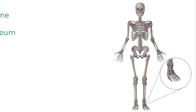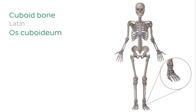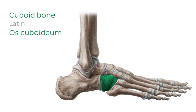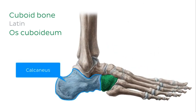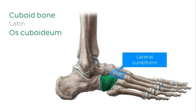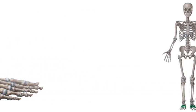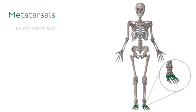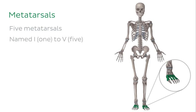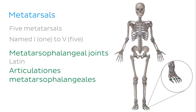The last tarsal bone is the cuboid bone, which articulates with the calcaneus posteriorly, the lateral cuneiform medially, and the fourth and fifth metatarsals anterolaterally. There are five metatarsals of the foot that connect the ankle to the toes, named one to five from medial to lateral when viewed from the dorsal surface. The metatarsal bones are connected to the phalanges of the foot via the metatarsal phalangeal joints.